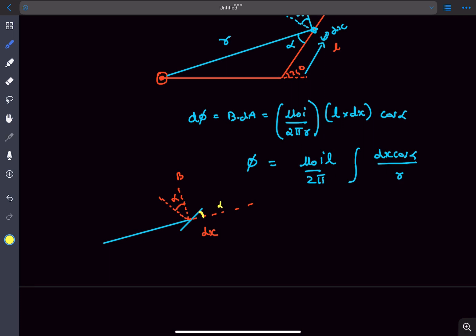So this is our dx element. If you see carefully, dx cos alpha is something like this, which is basically a small change in our r vector. So dx cos alpha is basically a small change in r vector, so we can actually write dx cos alpha as dr.